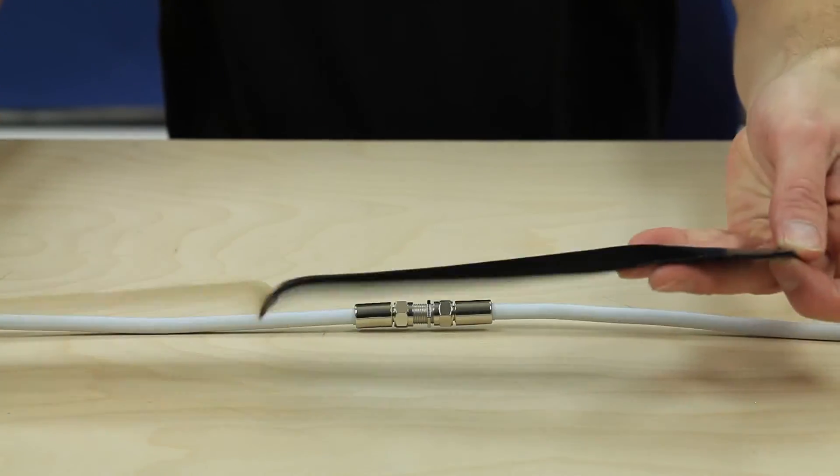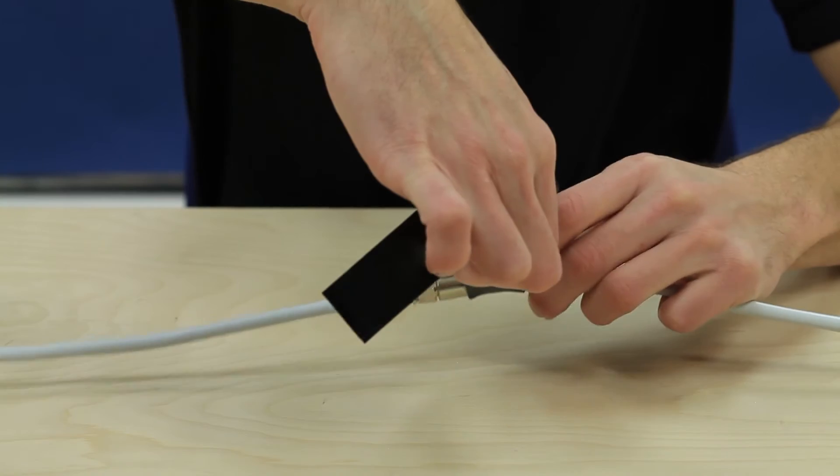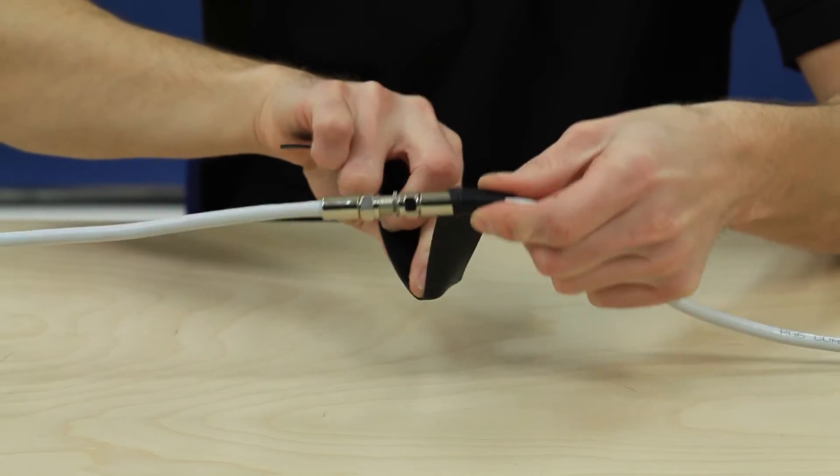Remove the backing strip from the tape. Place the tape below the connection and begin to wrap it around the cable. Stretch the tape at least three-quarters of the original width as you wrap for a proper seal.